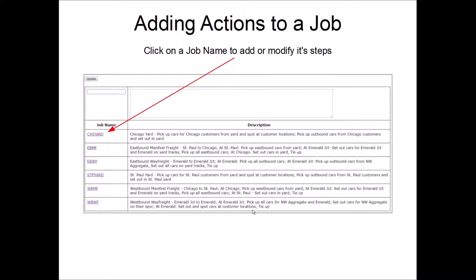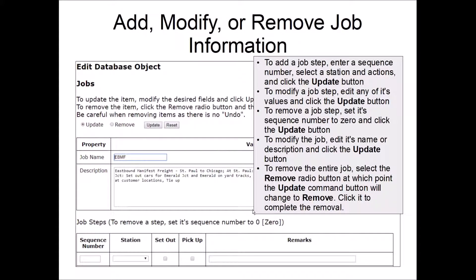So to add these different steps to a job, the list of stations where the job will go, all you do is you click on that link and it will bring up another form. This is what you'll see after you click on a job's link.